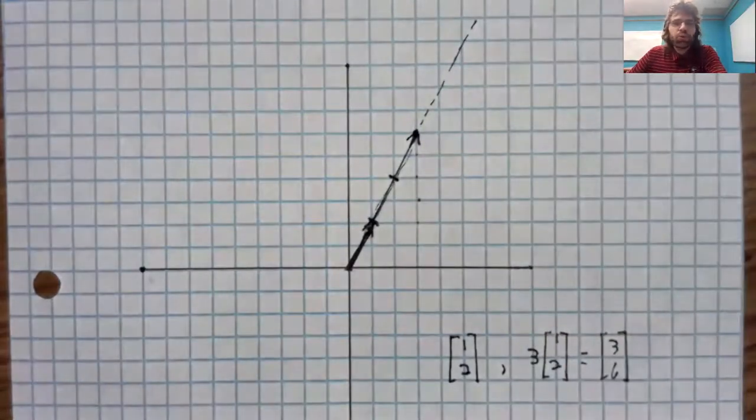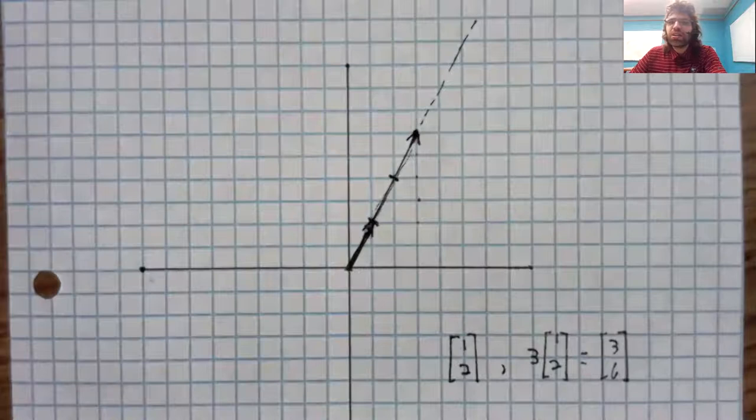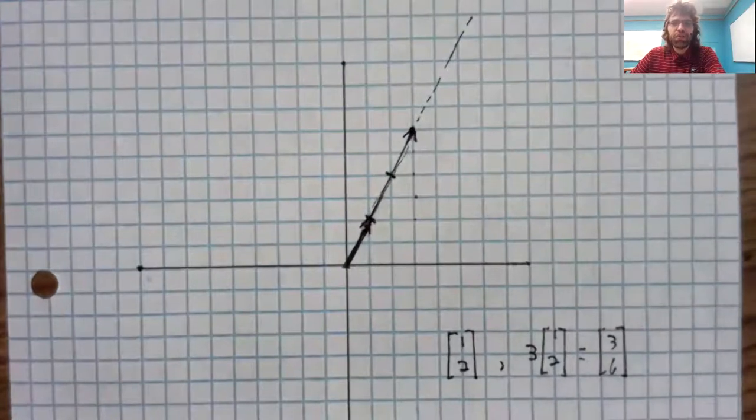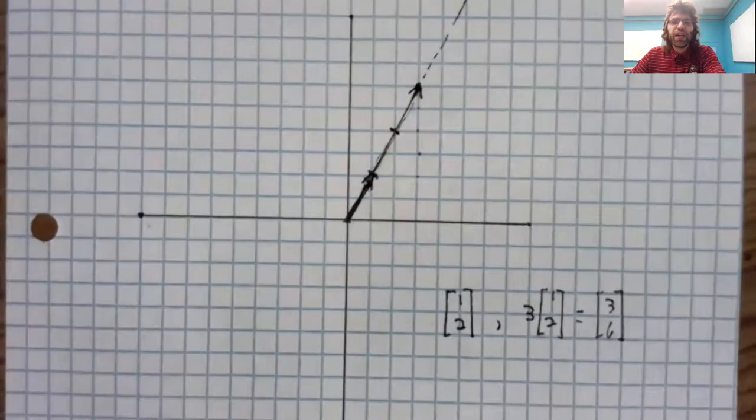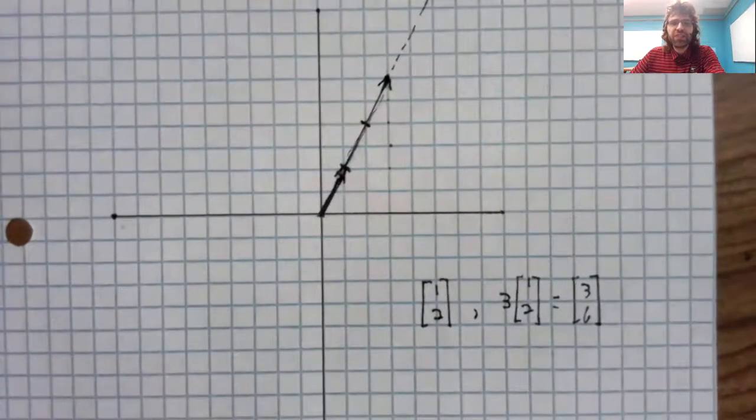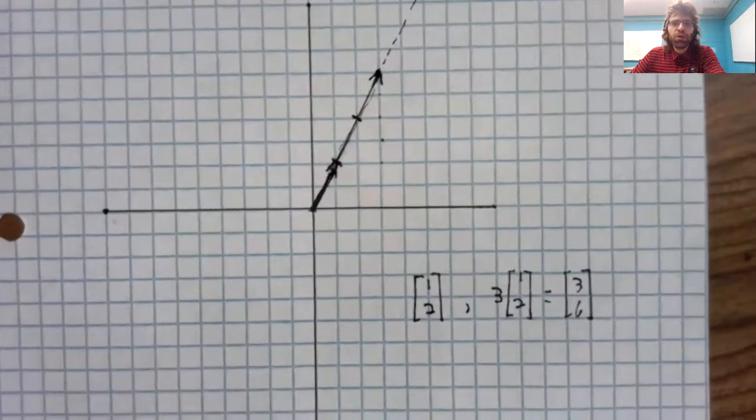The length got multiplied by three. Another way of saying that would be that the length got scaled by a factor of three. Hence, the phrase scalar multiplication.